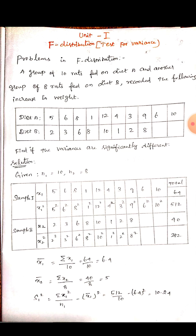So the given data will be here. Diet A will have 10 data values and diet B will have 8 data values. Find if the variances are significantly different.